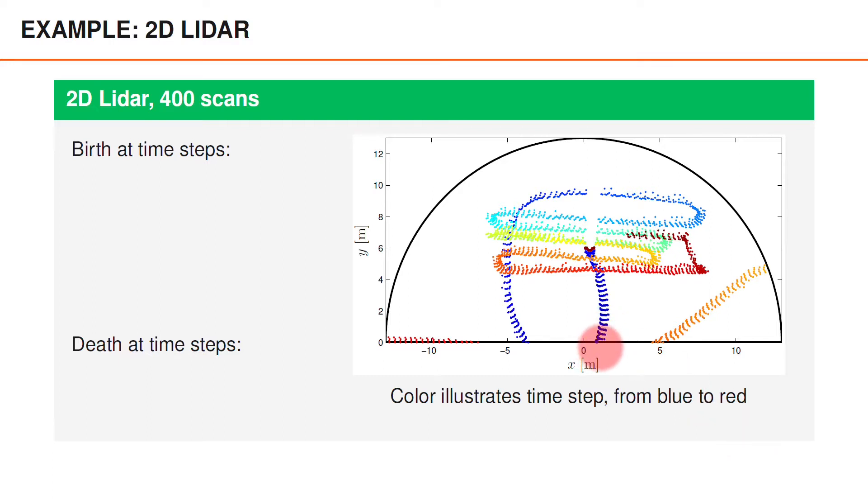First, one object enters close to the origin, and the origin is where the sensor is located, and this person then proceeds to stand still in front of the sensor. Another one enters to the left of the first one, and then it walks around inside the field of view. A third enters here on the right, and exits shortly thereafter. Similarly, a fourth one enters over here and then exits shortly thereafter.